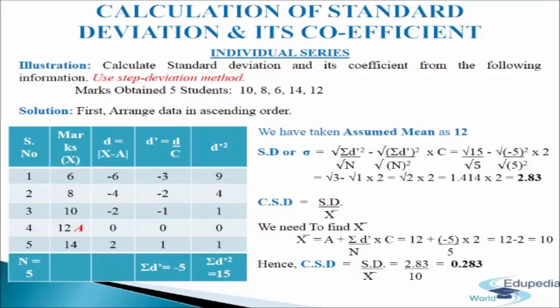We will calculate standard deviation and its coefficient using the step deviation method. Marks obtained by 5 students: 10, 8, 6, 14, and 12. We will make a table of 5 columns. The first column has serial numbers 1 to 5, so n = 5. The second column has marks x in ascending order: 6, 8, 10, 12, 14. In this illustration we have taken assumed mean a = 12.